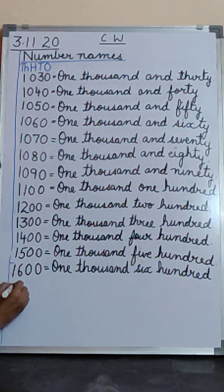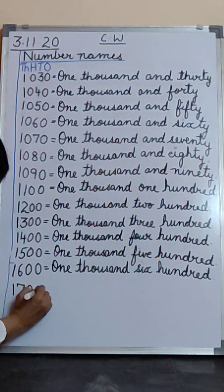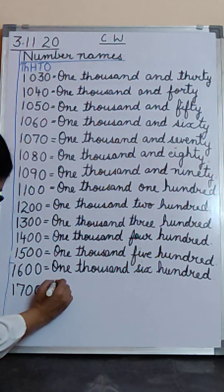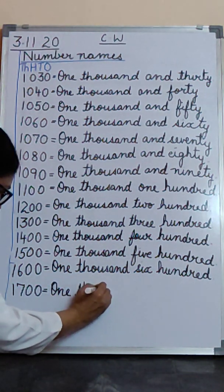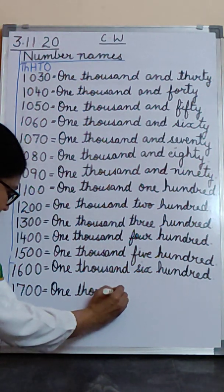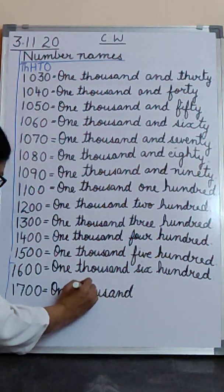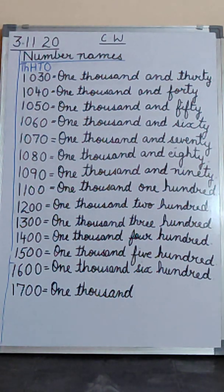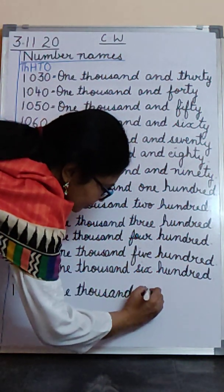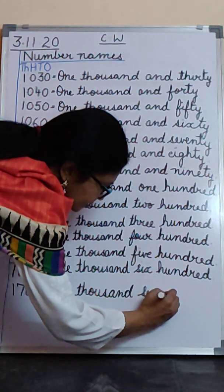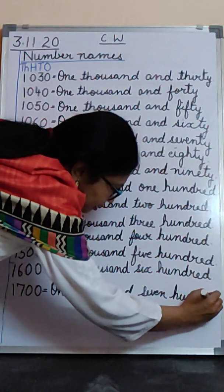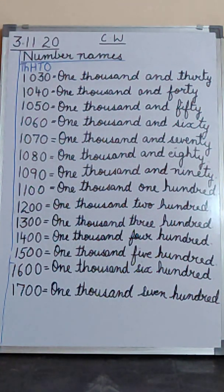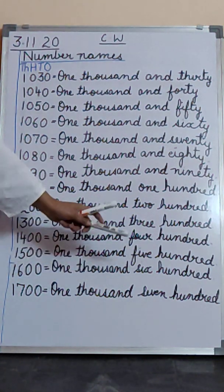Then write 1,700. O-N-E, one. T-H-O-U-S-A-N-D, one thousand. Seven. S-E-V-E-N, seven. And H-U-N-D-R-E-D, hundred. Alright, 1,700.